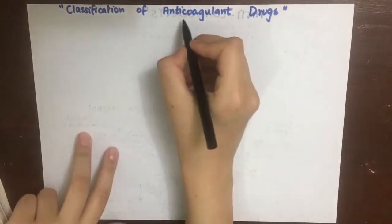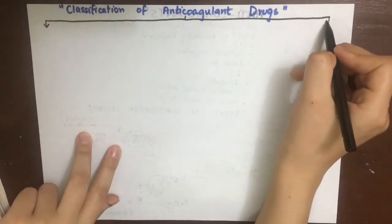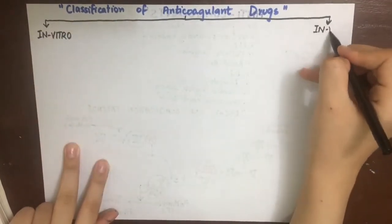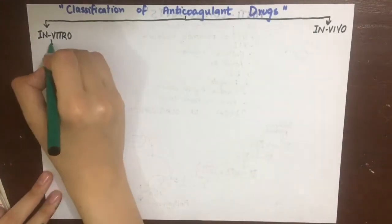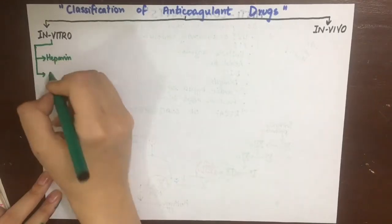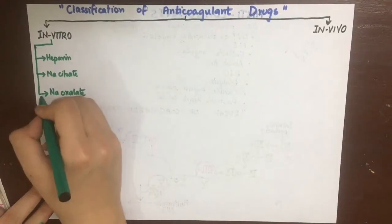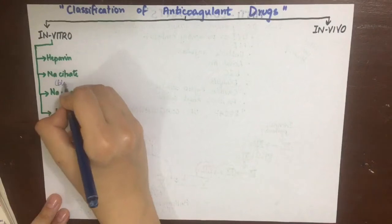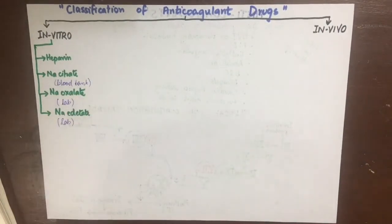Coming to the classification of anticoagulant drugs, they can be used in vitro in the lab and in vivo inside the body. The in vitro anticoagulant drugs include heparin, sodium citrate, sodium oxalate, and sodium editate. Sodium citrate is mainly used in blood banks to store blood. Sodium oxalate and sodium editate are used in laboratories.